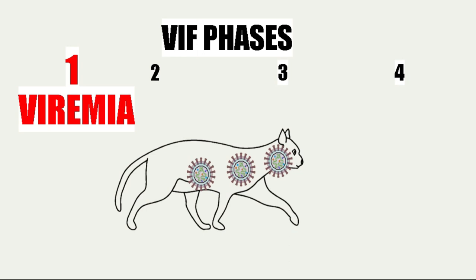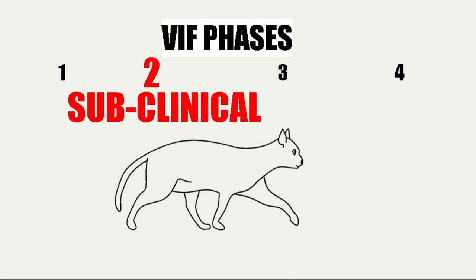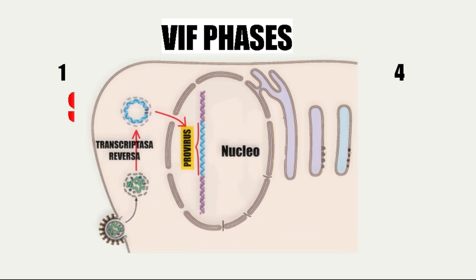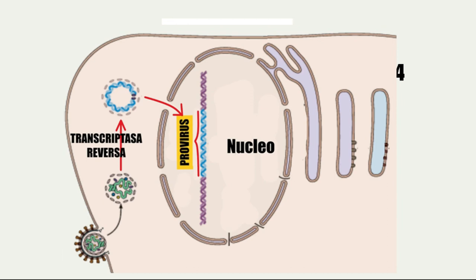Then we move to a subclinical phase, in which the virus enters the cytoplasm of the cell. As in feline leukemia, the virus uses a reverse transcriptase to convert its RNA into viral DNA. This viral DNA then enters the nucleus of the cell to remain as a provirus.